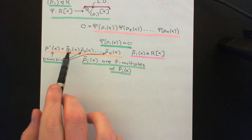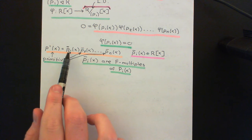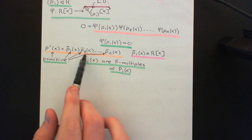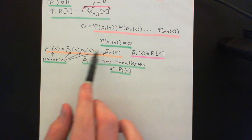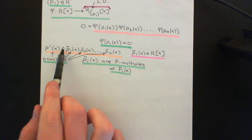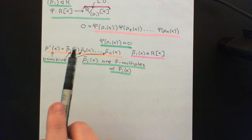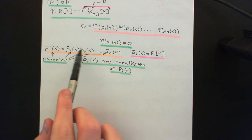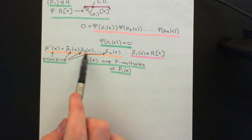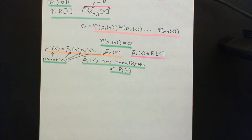Why can I claim that? Well, let's suppose that one of these wasn't a primitive polynomial — then it would be possible to pull out from all of the coefficients some non-unit element; there would be some common divisor of all the coefficients that was not a unit. And of course, then you could bring this right out to the front of the whole product. And then it would be possible to write p'(x) as this constant times what's left — p̄₁(x) times what's left of p̄₂(x), etc. So if one of these was not primitive, it would imply that p'(x) was not primitive. Since p'(x) is primitive, all of these must also be primitive.